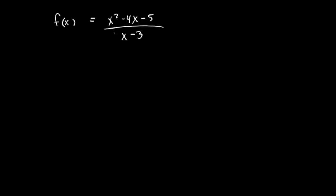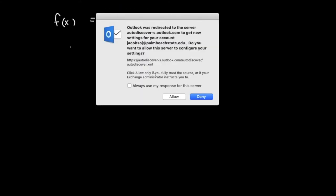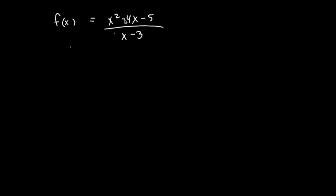Let's talk about slant asymptotes. So this is a rational function and we can analyze this. Obviously, the vertical asymptote is three. There's no hole because even if I factor this, nothing is going to cancel. And there's no horizontal asymptote because the degree of the numerator is greater.